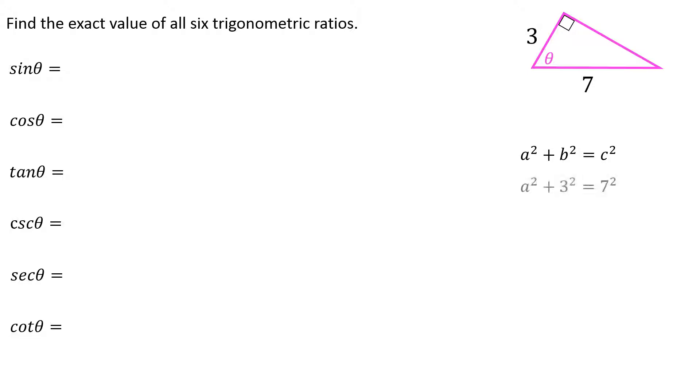The Pythagorean theorem would be the tool that I would use. Looks like 2√10 is the missing side. Sine is opposite over hypotenuse, cosine adjacent over hypotenuse, tangent opposite over adjacent.